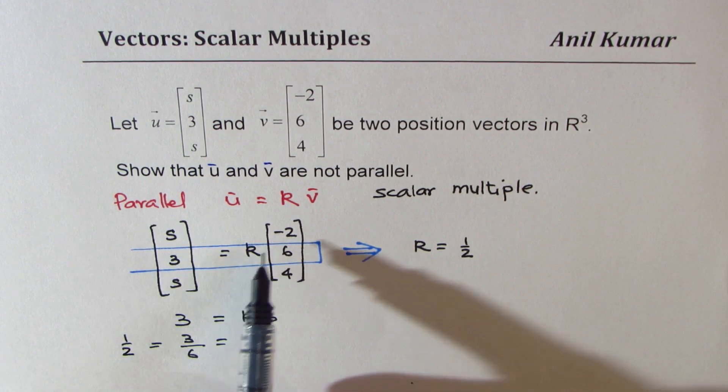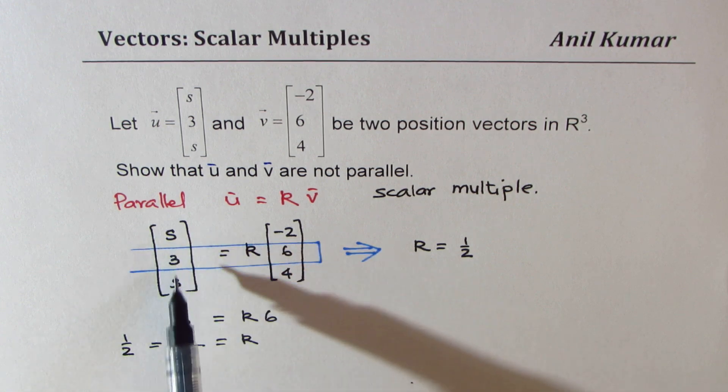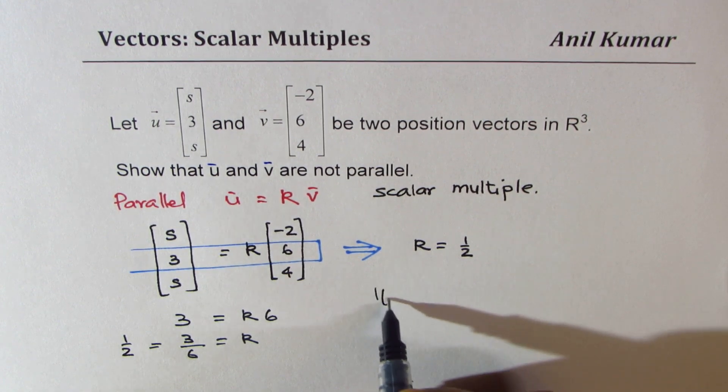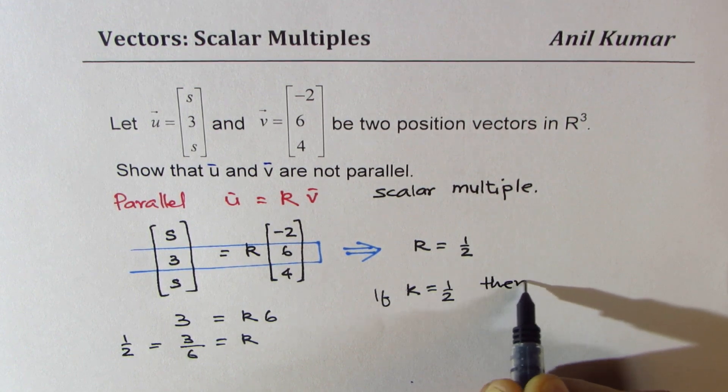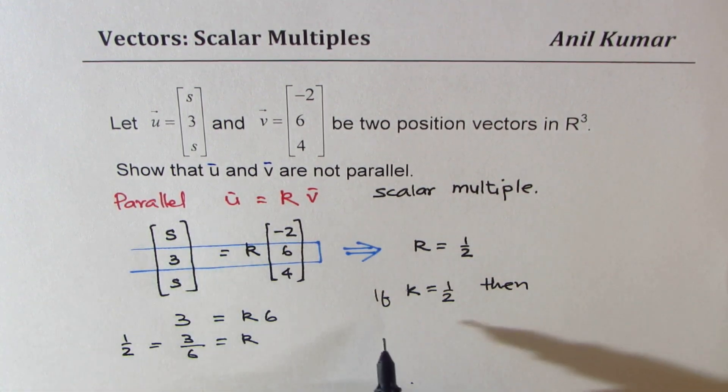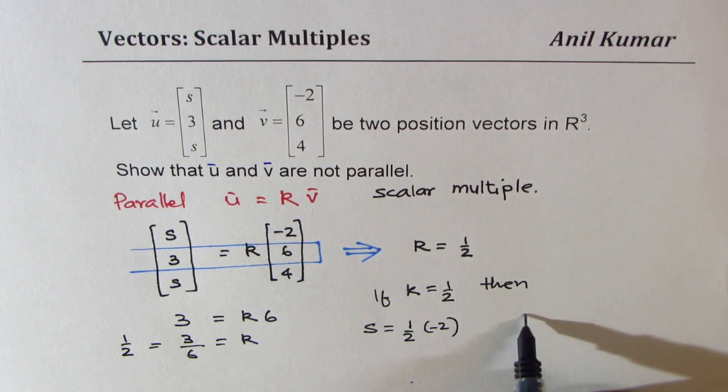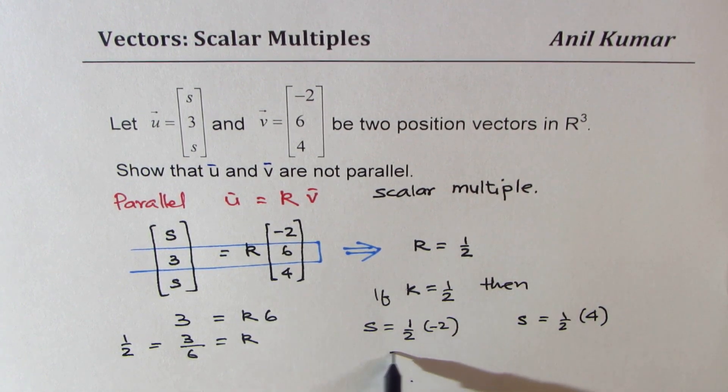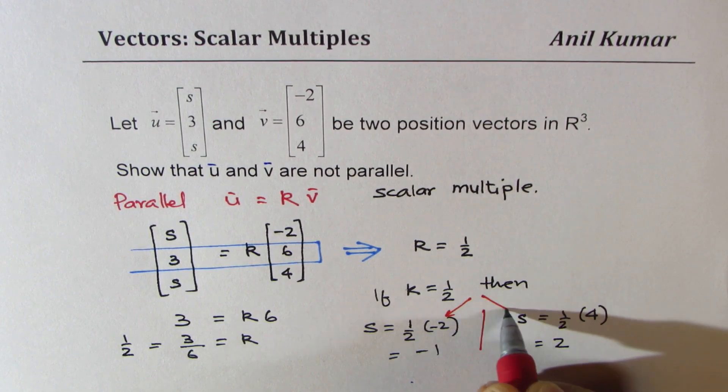Now if k is half, in that case we get s as two different values, right, not the same values. The idea is if k is equal to half, then one s value is half of minus 2 and the other one is half of 4. So we get two different values which is minus 1 and 2.